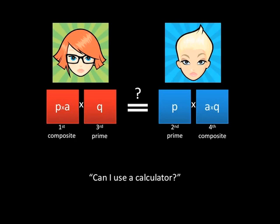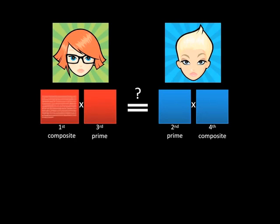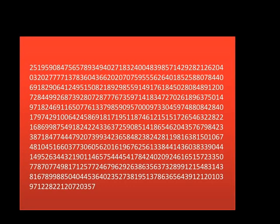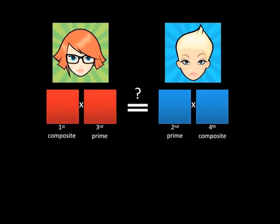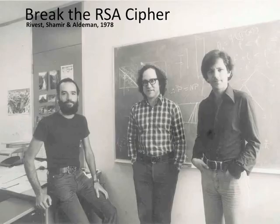Let's look at a ridiculous example — this large composite number. Can you find its prime factors? There are two of them, but needless to say it's rather difficult to solve. The unsolved problem of mathematics is to find a reliable way for the blue team to win. This is equivalent to breaking the RSA cipher, which is the basis for internet security. If your kids manage to do this, a million dollars is peanuts — they'll have access to government secrets, bank account information, and could become master criminals overnight.